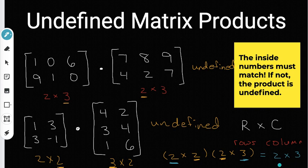So that's dimensions of matrix products. Remember, the inside numbers do have to match up. If not, the product is going to be undefined, which means you can't multiply the two matrices together. But if the inside numbers do match up, you actually can multiply them together, and whatever the outside numbers are, that's going to be the dimensions of the product.